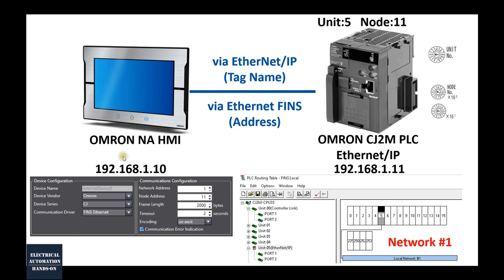From my personal experience, I used the Omron NA series HMI before and I also used the Omron CJ2M PLC before. But when I set up the communication between these two devices, I still got trouble with that communication and the settings. So I would like to share this experience.